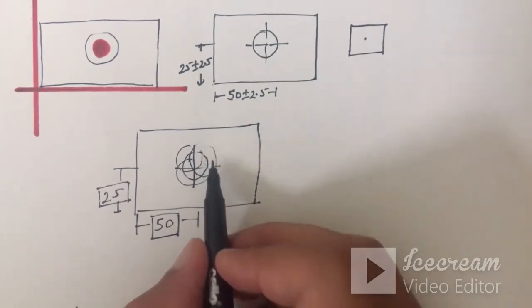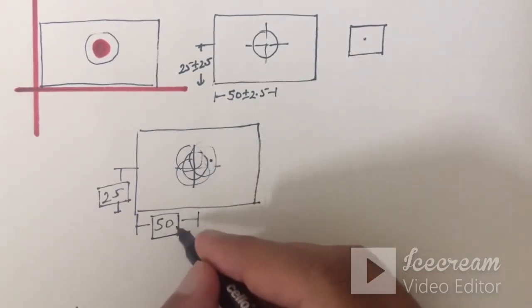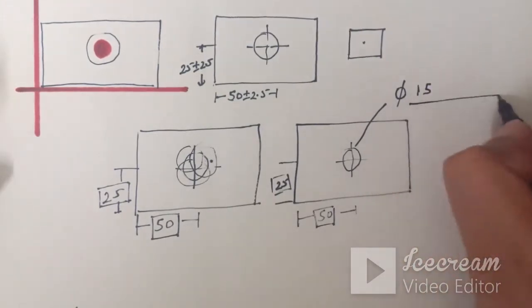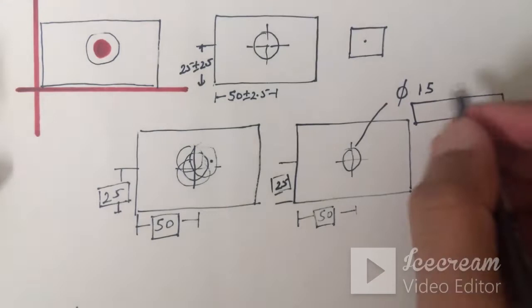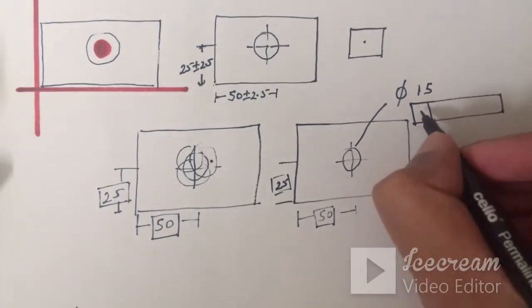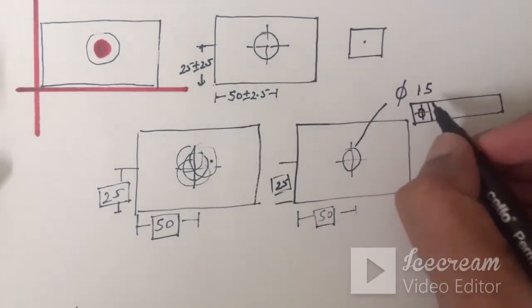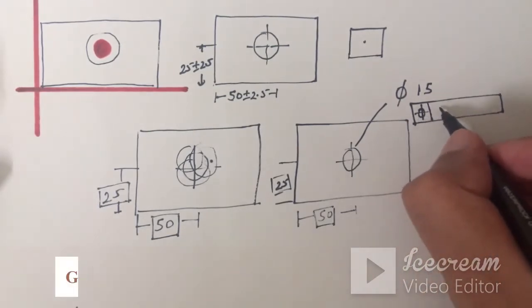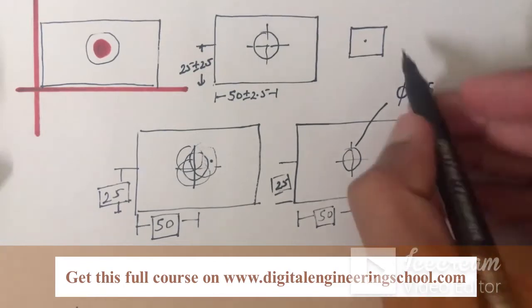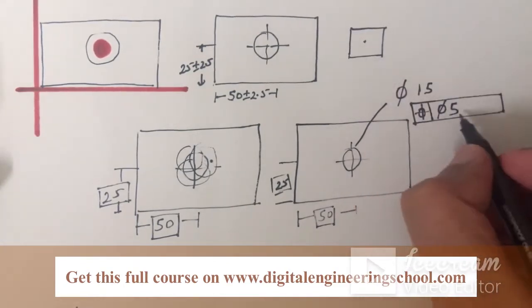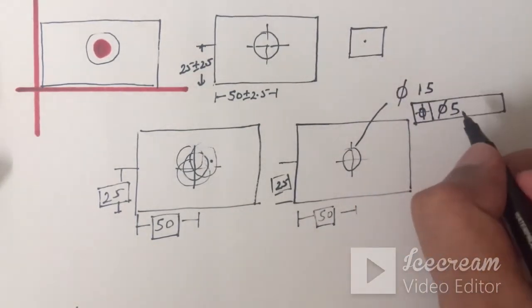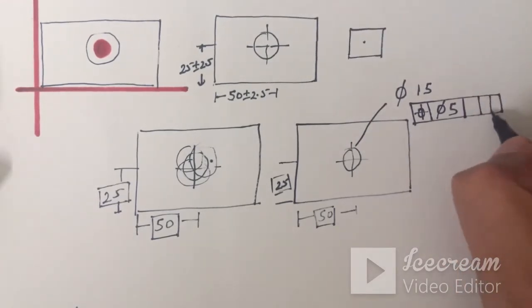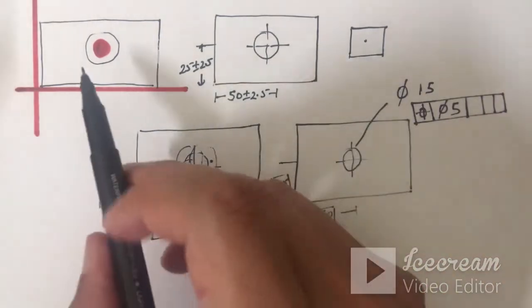I will define the position of this hole rather than defining tolerance on these dimensions. I will create a feature control frame and say that this hole has to be positioned — the symbol for position is this. This hole has to be positioned within a diametrical zone of 5 mm. Rather than a square tolerance zone, I will define a diametrical tolerance zone of 5 mm, and now we need to define some datums for how this block will be assembled into this assembly.